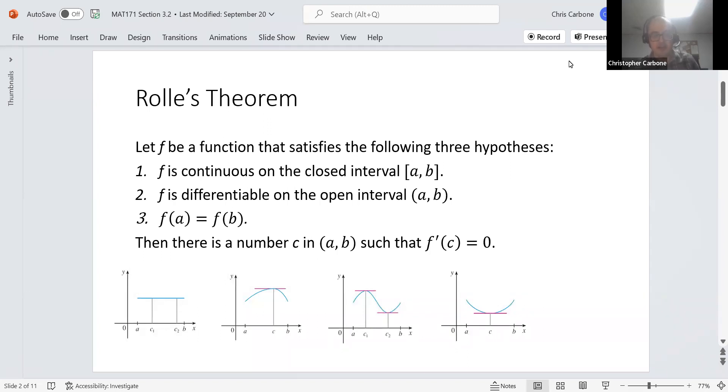We could see that going on in all four of these graphs I have down here. This first horizontal function right here between A and B, the value of the function is the same, but any point we have on there, the derivative is zero.